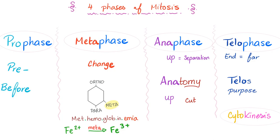Next, anaphase. What does 'ana' mean? Think of anatomy — tomy means to cut, and ana means up. So anatomy literally means to cut you up. Telophase: telo means the end, the far, or the purpose. Telos in Greek is the purpose. That's why we call it television — tele means far, vision means to see. You can watch football games from a stadium that's far away. Tele, vision. Telescope.